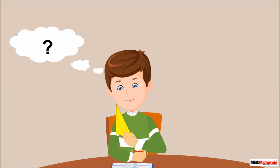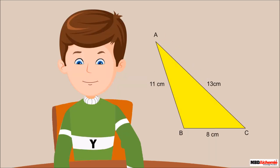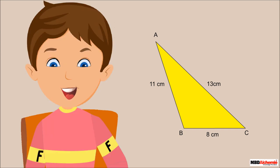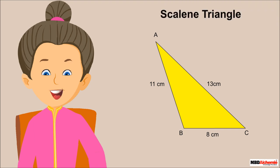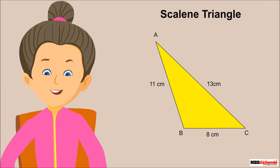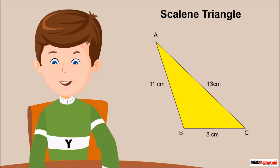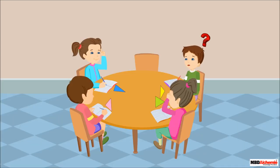Neil is still confused about how to find the area of his triangle. He discusses with his friends and they determine it is not a right triangle, not equilateral, and not isosceles — Sophie confirms it is a scalene triangle as all sides are of different measures. Neil asks how they can find the area of a scalene triangle.